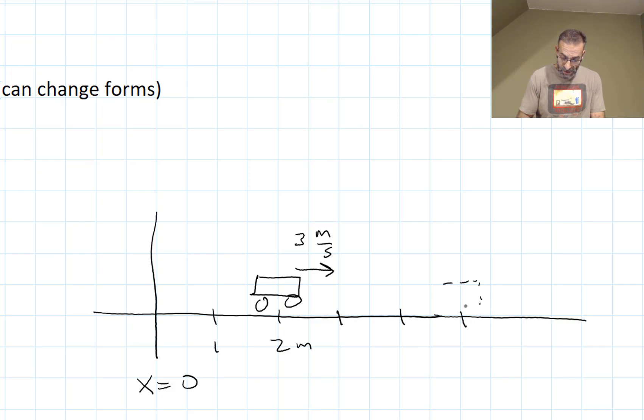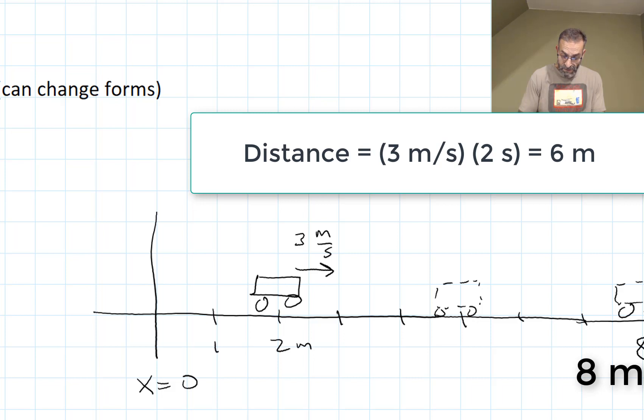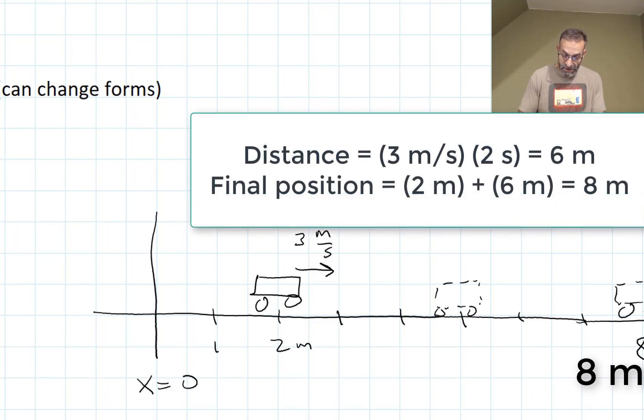It's going to be here, and two seconds later it's going to be here at x equals 8 meters, and it's still going to be moving at 3 meters per second. Because the distance is going to be 3 meters per second multiplied by 2 seconds equals 6 meters, and it starts at 2, so its final position is going to be 2 plus 6 or 8 meters.